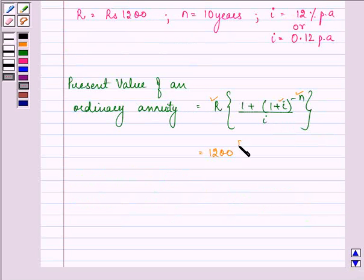We are given 1200 into 1 plus 1 plus 0.12 will be 1.12 raised to the power minus 10 upon 0.12.